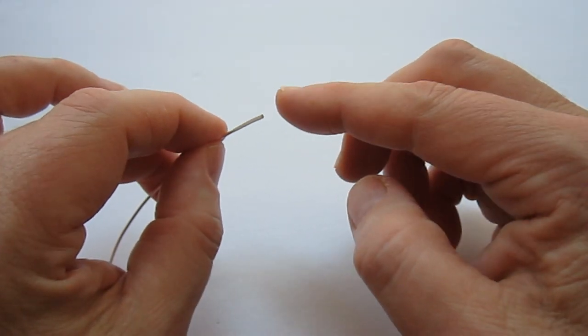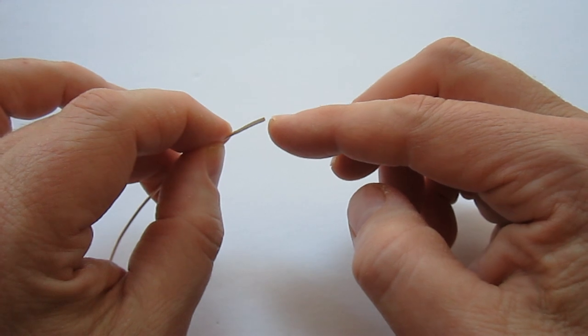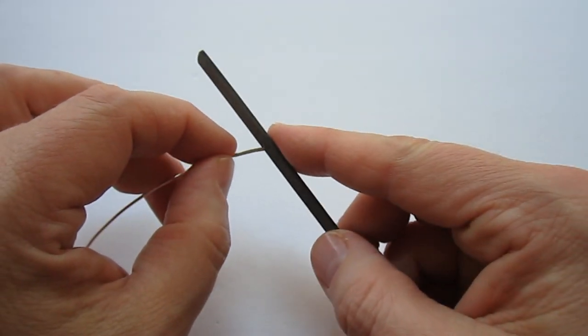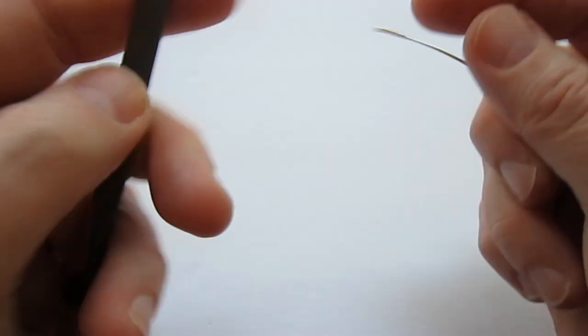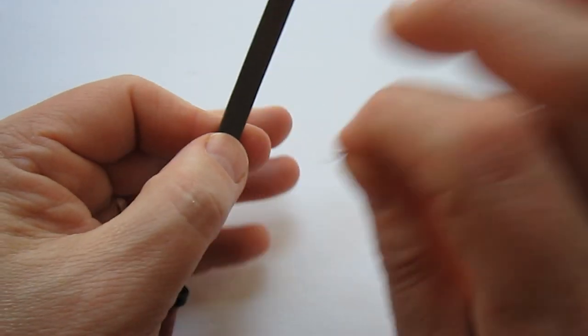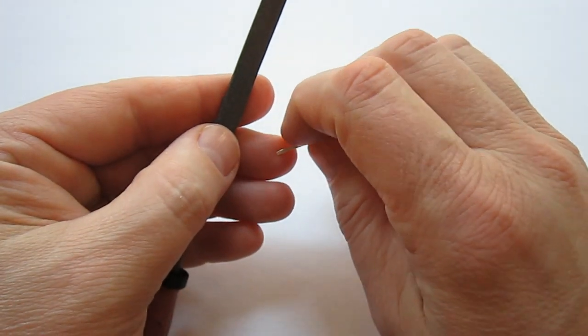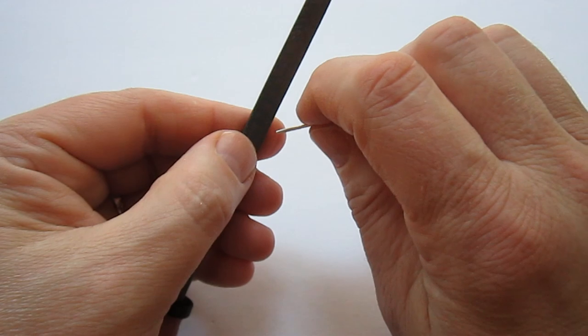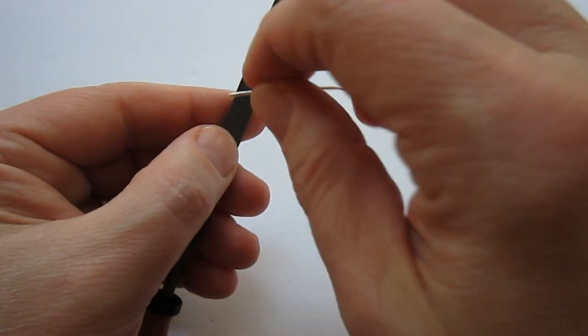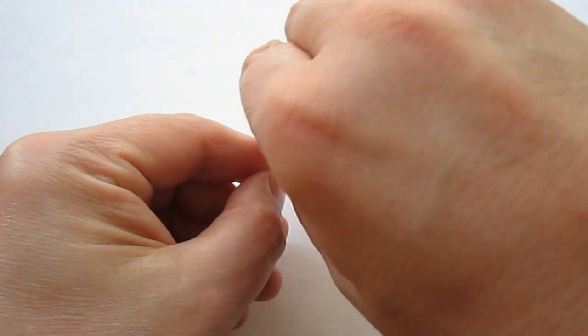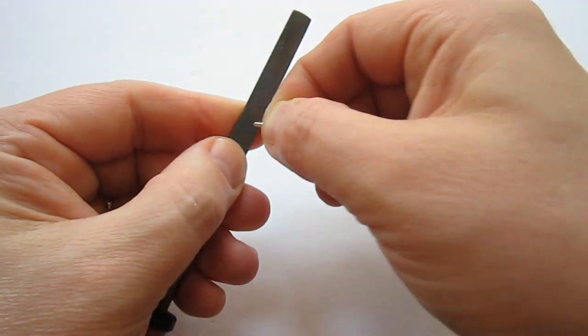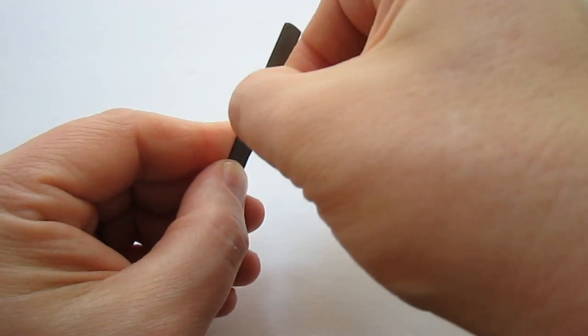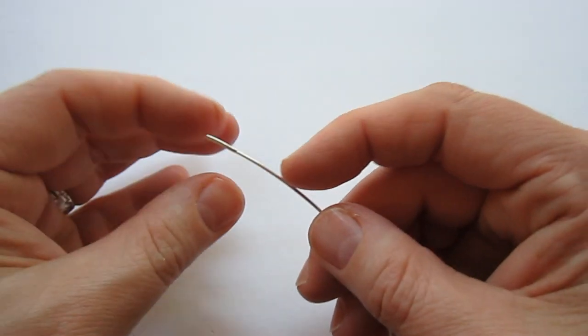Okay, so now you might notice that your end is a little bit kind of pokey and sharp, and that's why we are going to use our file to sand it down. I like to make it so it's kind of rounded off. And so we'll do that. This gives me the heebie jeebies to listen to, so I'm going to turn off the sound while I do this.